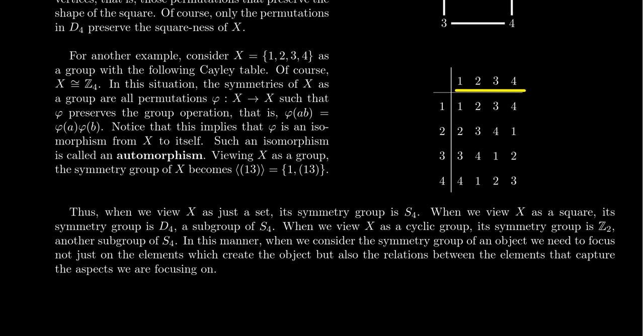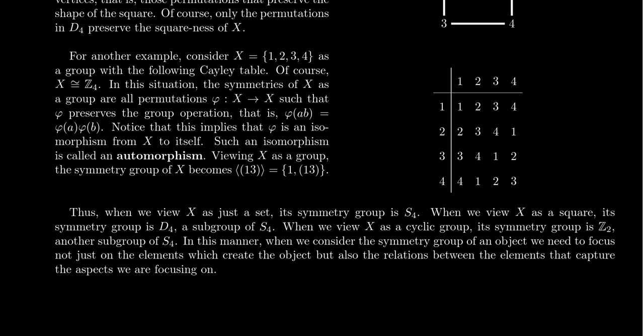We could take the set 1, 2, 3, 4 to be the cyclic group of order 4. These numbers are elements of a group where 1 is the identity, and the Cayley table shows: 2×2=3, 2×3=4, 2×4=1, 3×2=4, 3×3=1, 3×4=2, 4×2=1, 4×3=2, 4×4=3. Multiplying by 2 is like adding 1 mod 4, so 2 is the generator. This group is isomorphic to Z4.